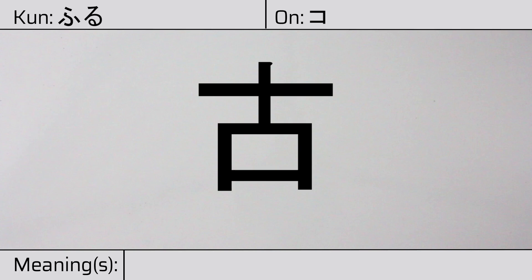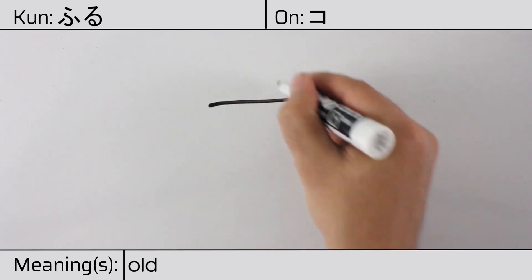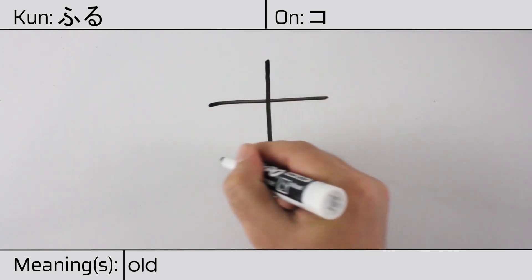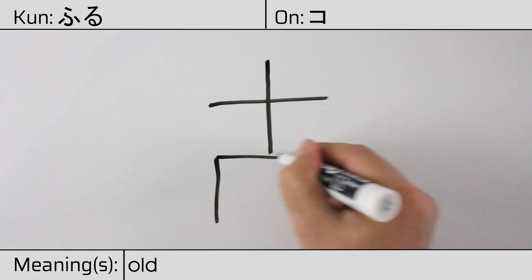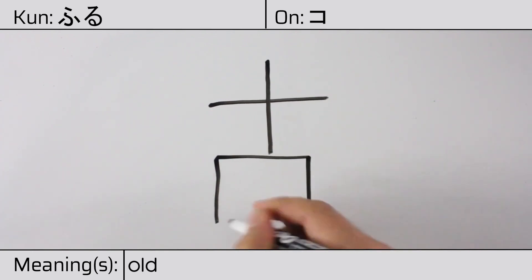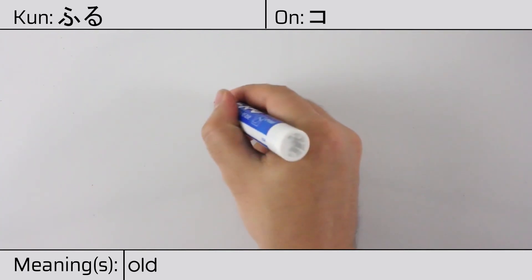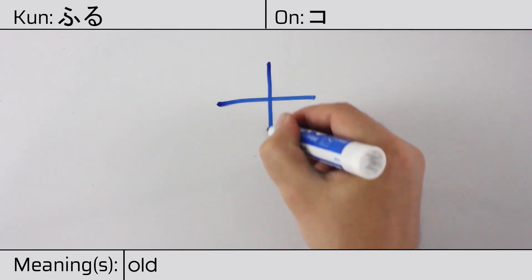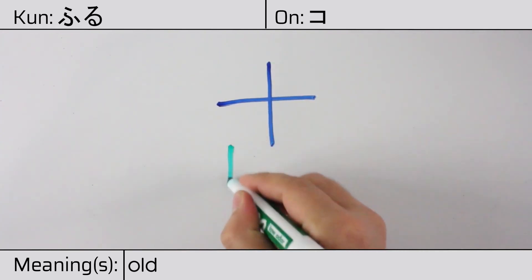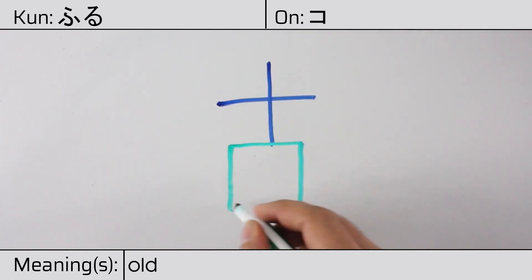This character has the meaning 'old.' Here is the stroke order. This character is made up of the following radicals or parts: kanji jiu, or 'ten,' followed by mouth, kuchi.